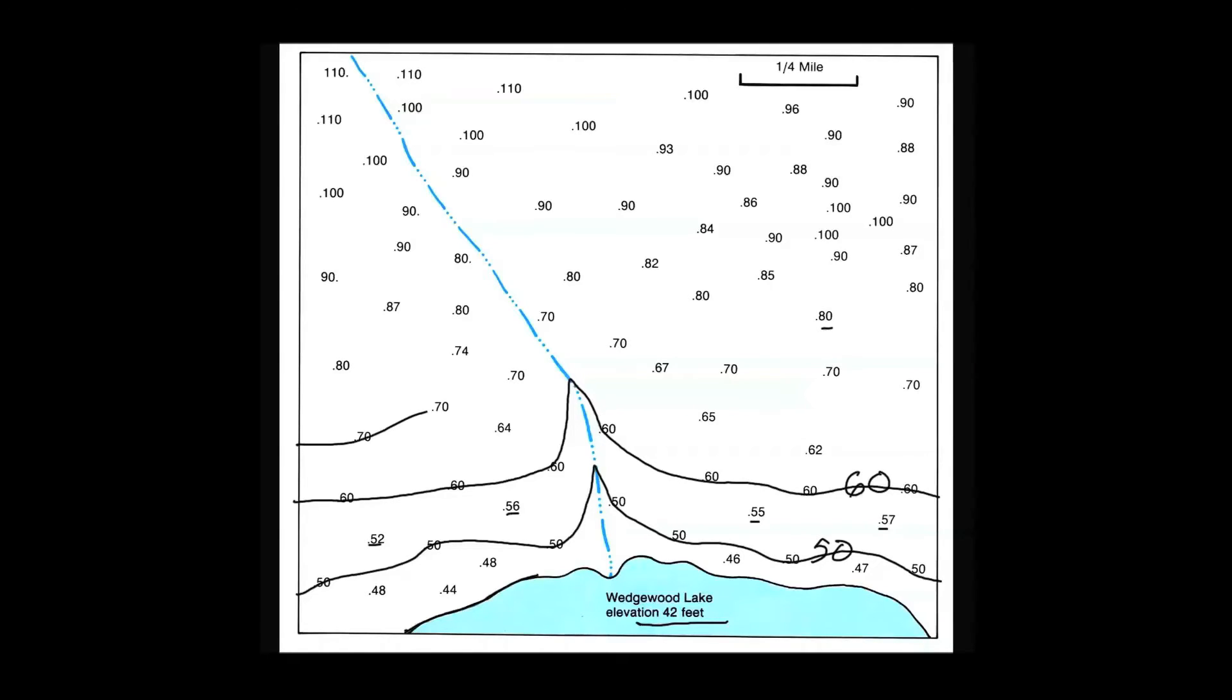Next line will be 70 feet. I'll make a V where I cross the stream. V points upstream. I see 70 foot elevations ahead so I'm going to connect them. Here comes 80. They'll follow a similar pattern. And right off the map.